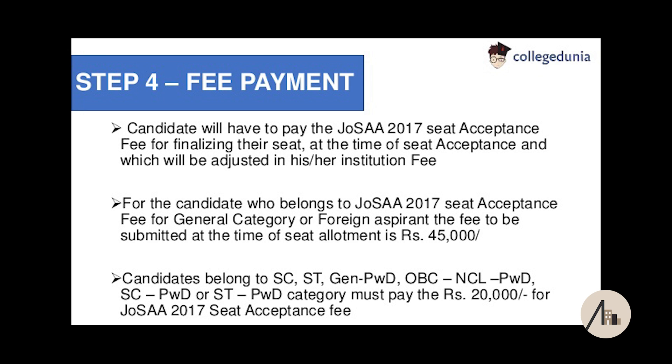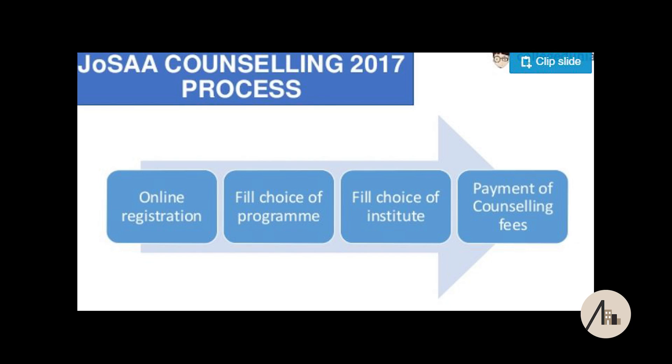The fourth step is payment of fees — that is the main thing to understand. If you don't pay the fees at the right time, you might be out of the counselling. Be sure to pay as soon as you get a college. For example, if at the first round I didn't get a college but at the second round I did, I have to pay the fees — even if I'm not sure I want to accept that college, because I got the seat I must pay for it.